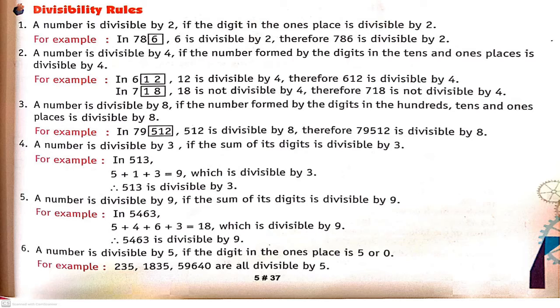Similarly, a number is divisible by 9 if the sum of its digits is divisible by 9. Like, if we have digits summing to 9, and 9 divided by 9 gives no remainder, it means the number is divisible by 9.